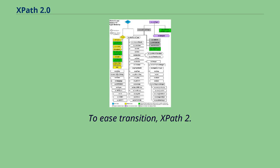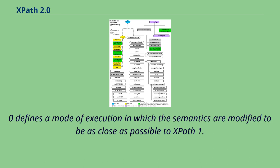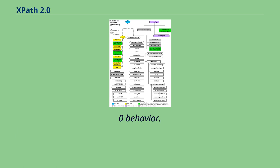To ease transition, XPath 2.0 defines a mode of execution in which the semantics are modified to be as close as possible to XPath 1.0 behavior.